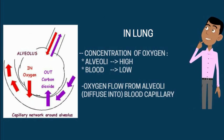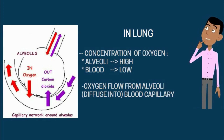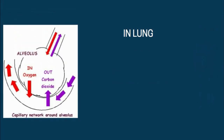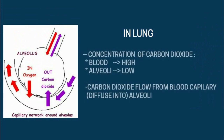In our lungs, the concentration of oxygen is high in the alveoli and low in the blood capillaries, which causes oxygen to diffuse from the alveoli to the blood capillaries following the concentration gradient. The concentration of carbon dioxide is low in the alveoli and high in the blood capillaries, which causes carbon dioxide to diffuse from the blood capillaries to the alveoli following the concentration gradient.